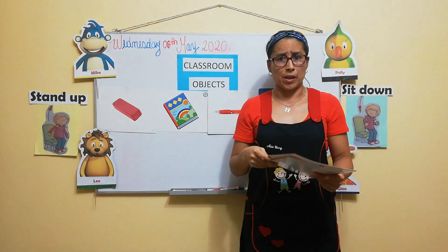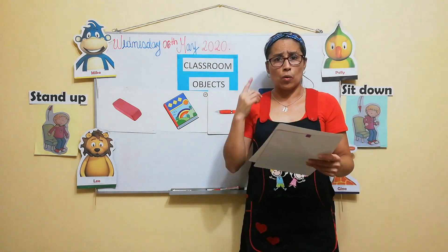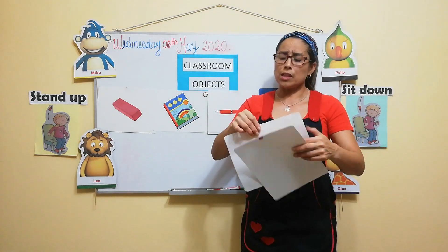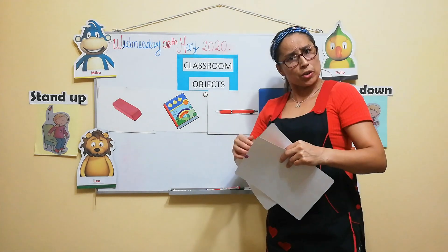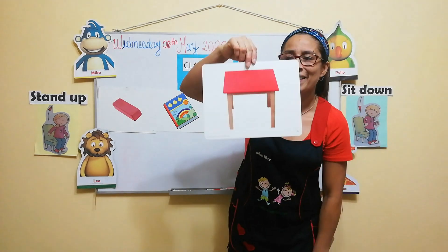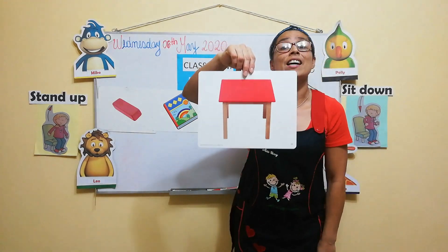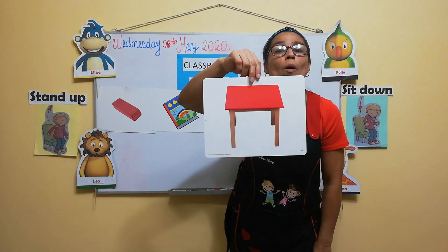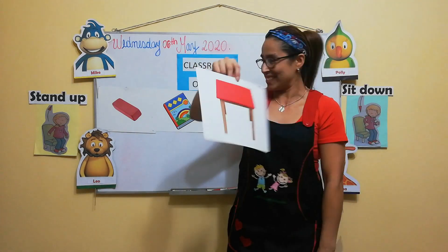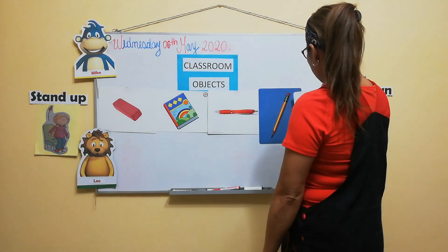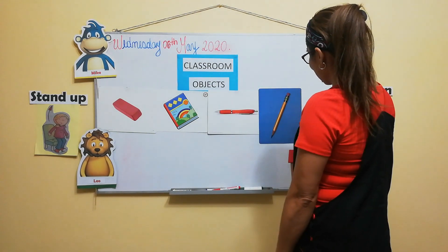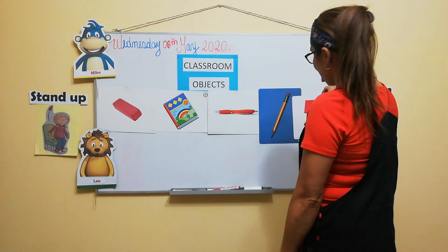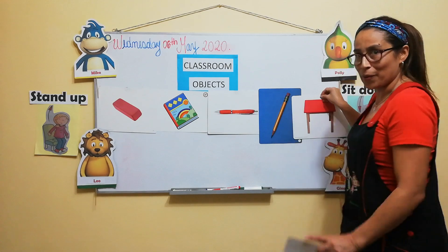Now, another thing. Okay. So, listen. It's a table. Yes. Look. Table. Table. Yes. It's a table. All right. It's a table. Okay. It's a table.